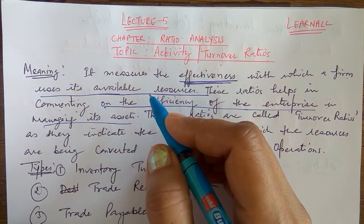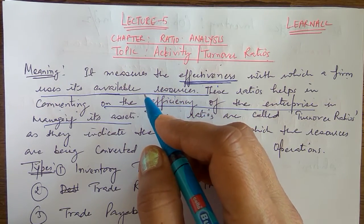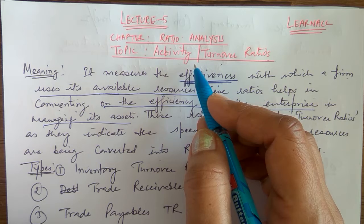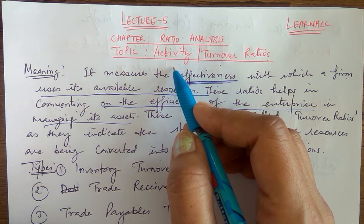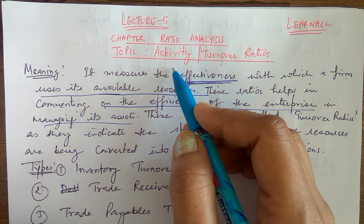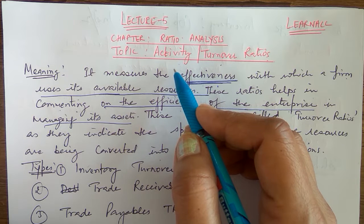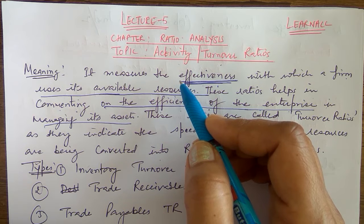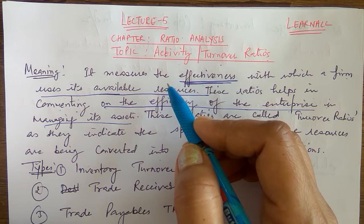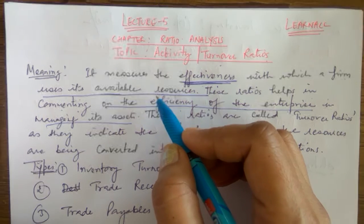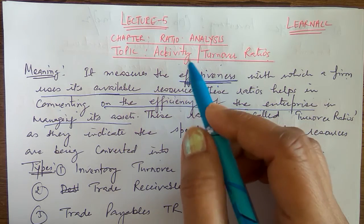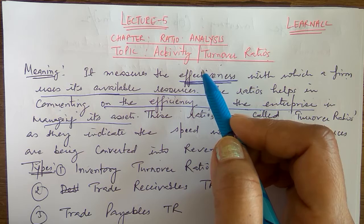Good morning students, welcome back to learning. Today's topic is activity or turnover ratios in ratio analysis. By the name, it is very clear — activity ratios help us in telling about the business activity. They help in telling about the effectiveness of the enterprise and efficiency in managing the assets, and how fast the finished goods are converted into revenue from operations.